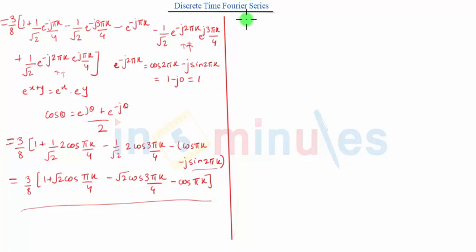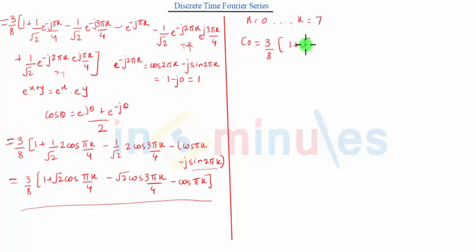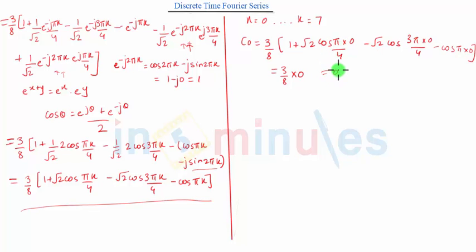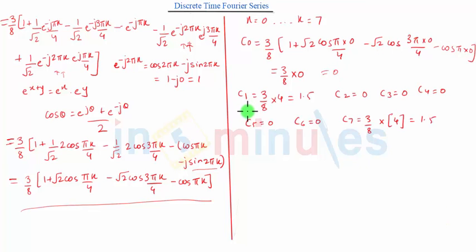Now we substitute k = 0 to 7 to get the Fourier series coefficients. When k=0: c(0) = (3/8)[1 + √2·cos(0) − √2·cos(0) − cos(0)] = (3/8)[1 + √2 − √2 − 1] = 0. After substituting k=1 to 7, only c(1) and c(7) equal 1.5; all the rest are 0.